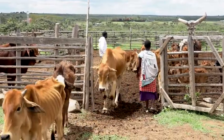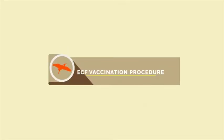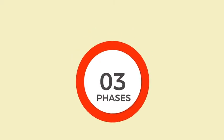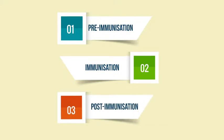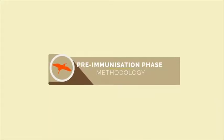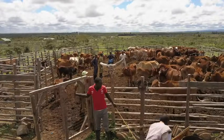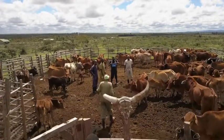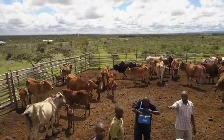We now come to a key section of this training: the vaccination procedure. The process involves three phases: 1. Pre-immunization, 2. Immunization, and 3. Post-immunization. Let us start with what the pre-immunization phase involves. An immunization campaign requires a lot of planning and preparation.